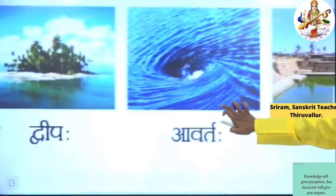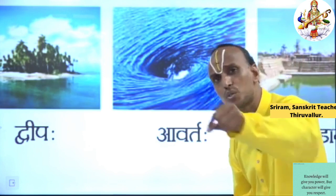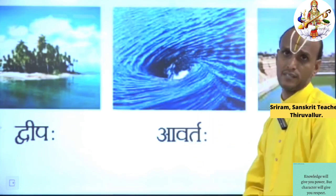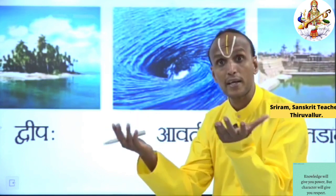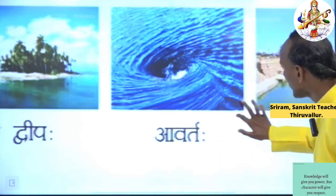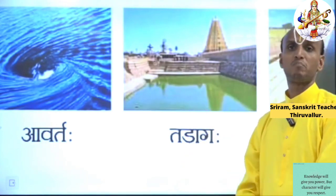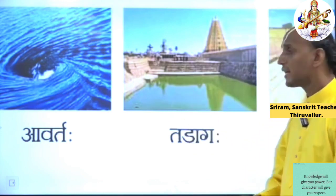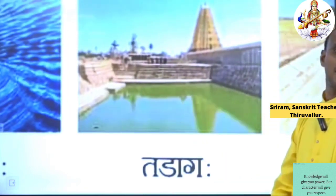Then the next one — Aavartaha. What is meant by Aavartaha? Aavartaha means a whirlpool — a swirling current you can see in some oceans. Then the next one — Tadagaha. What is meant by Tadagaha? Tadagaha means Pond. In Tamil we say Kulam. You can see the picture, right?